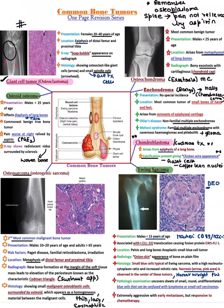Coming to diaphyseal tumors — osteoid osteoma and Ewing sarcoma. Osteoid osteoma affects the diaphysis of long bones, common in those less than 20–25 years of age. There is night pain which decreases with aspirin intake. In contrast, osteoblastoma's pain does not decrease with NSAIDs. Osteoid osteoma shows a radiolucent nidus — woven bone surrounded by sclerosis all around it.